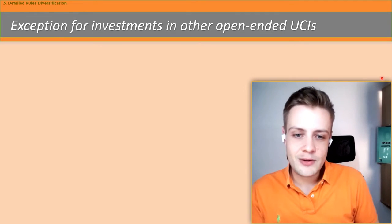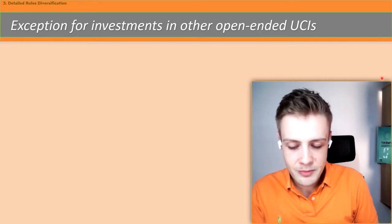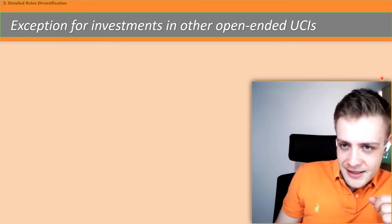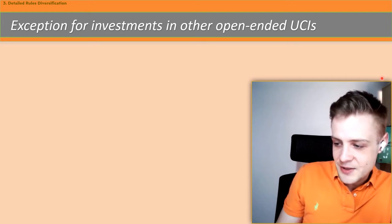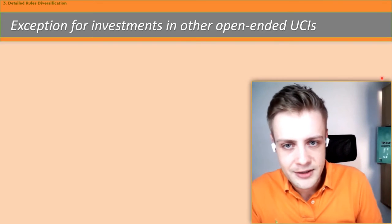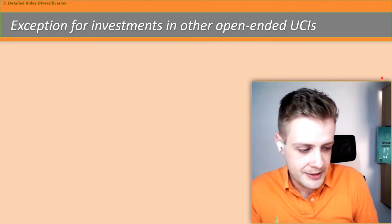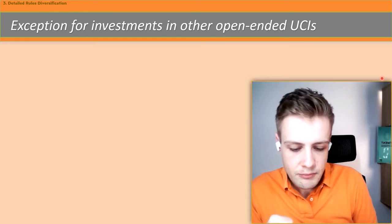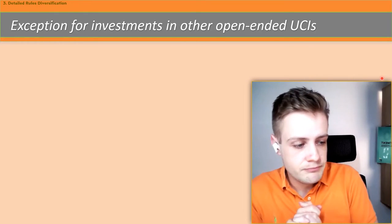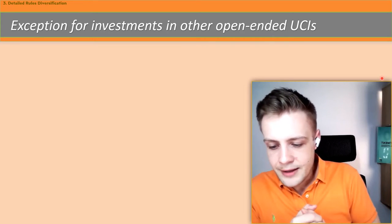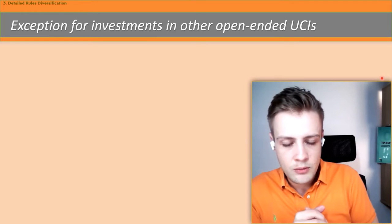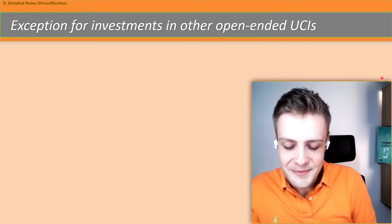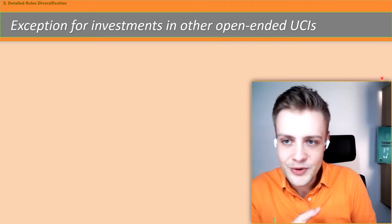Well, because this is not a live lecture, nobody answers me, but I will answer myself. An open-ended UCI is not a closed-ended UCI, thereby it is not explained. But we can start the other way around. A closed-ended UCI is actually a UCI which has not a fixed amount of shares. And in case this is an index replicating UCI as well, then they can be traded on an exchange.